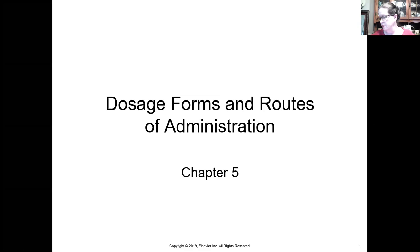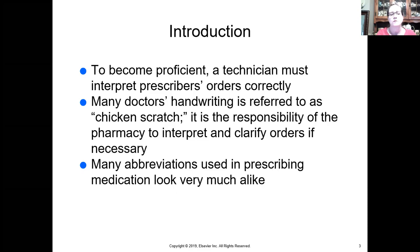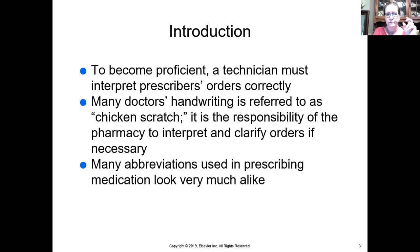Today we're looking at chapter five, which is dosage forms — what does the drug look like? Is it a solid or a liquid? And then routes of administration, as in how does it get into the body? Pharmacy technicians have to be able to interpret prescriptions properly. Every prescription must have a form and a route. For example, take one capsule by mouth — the form is the capsule, the route is by mouth.